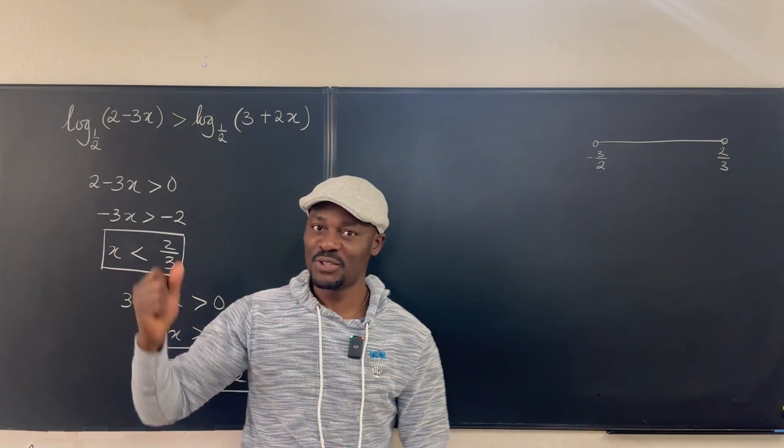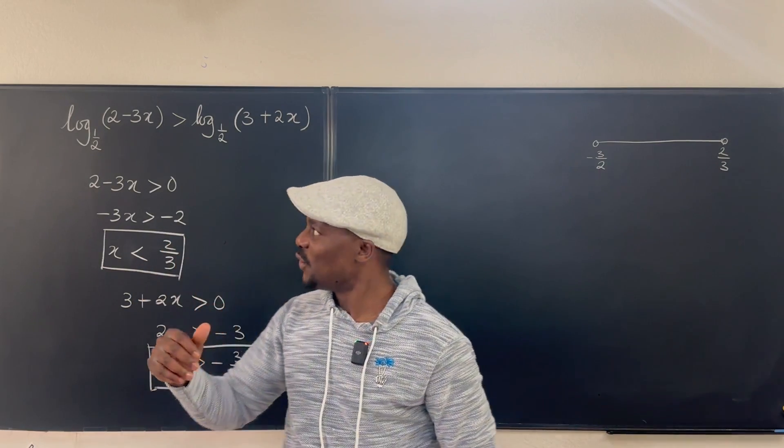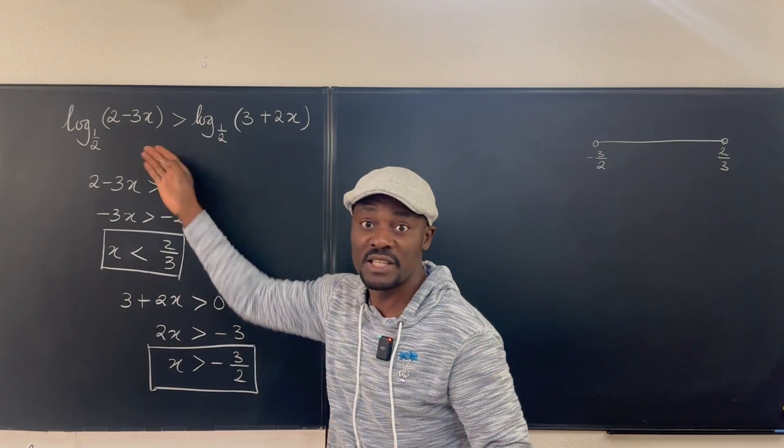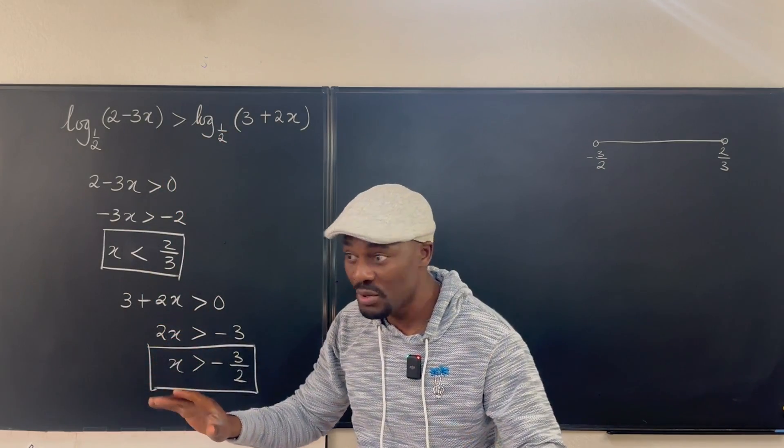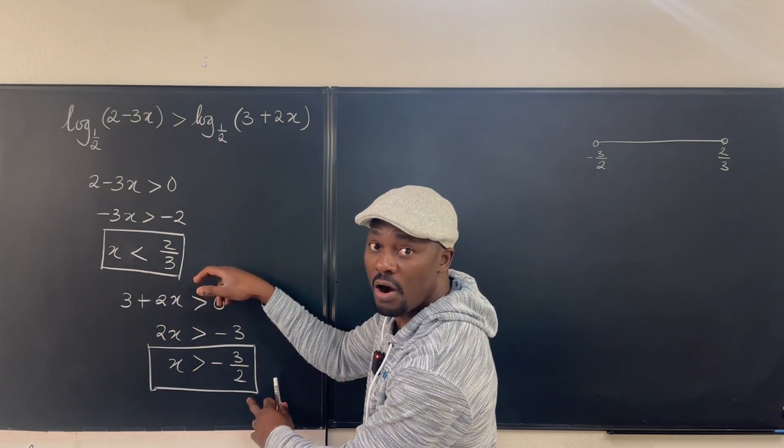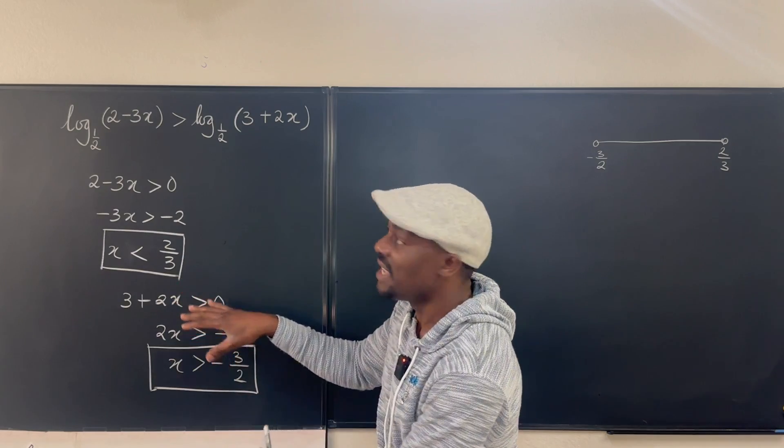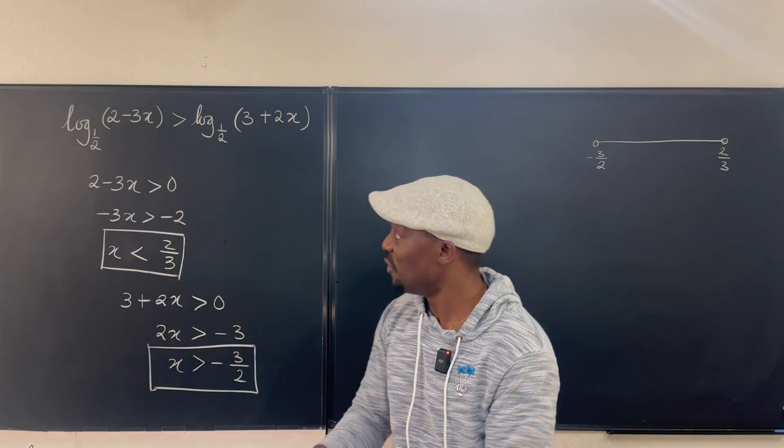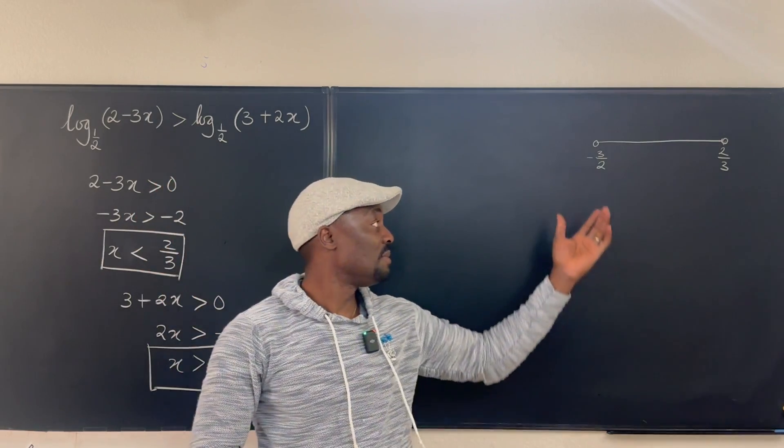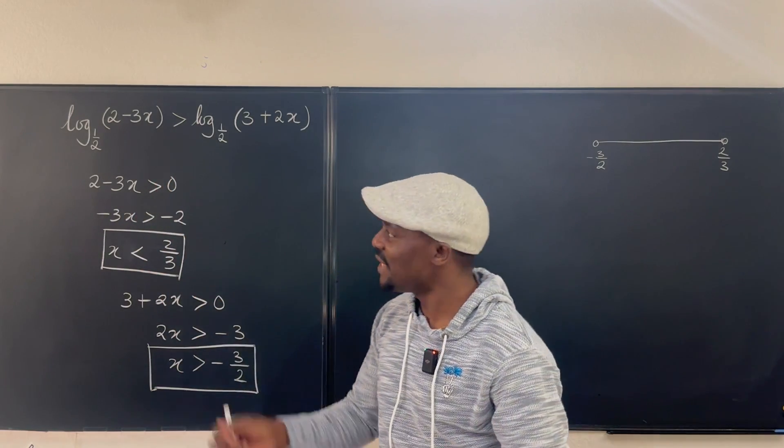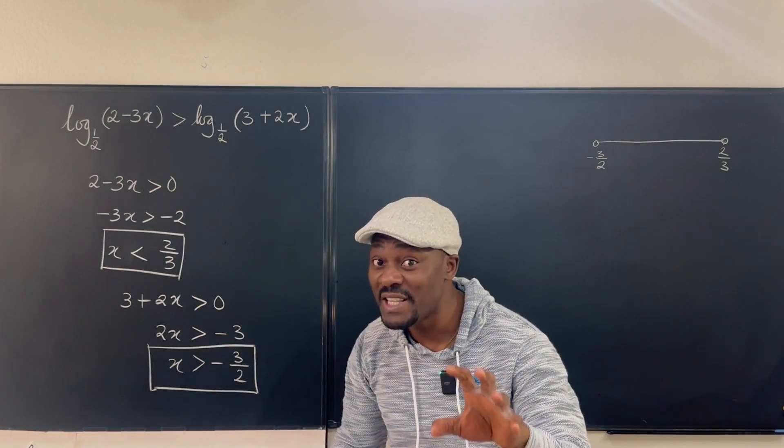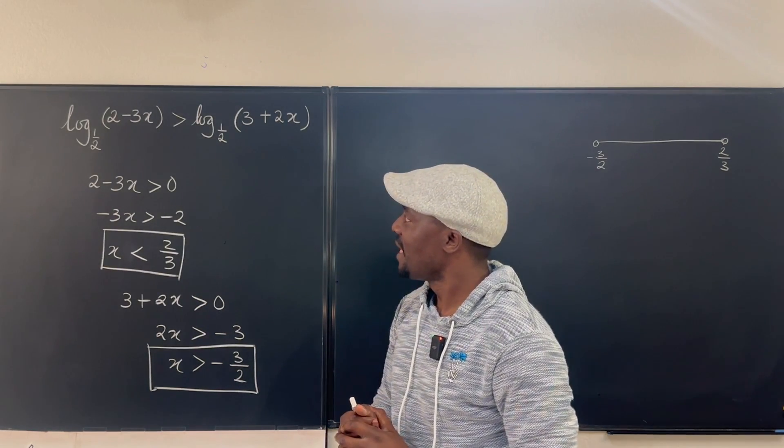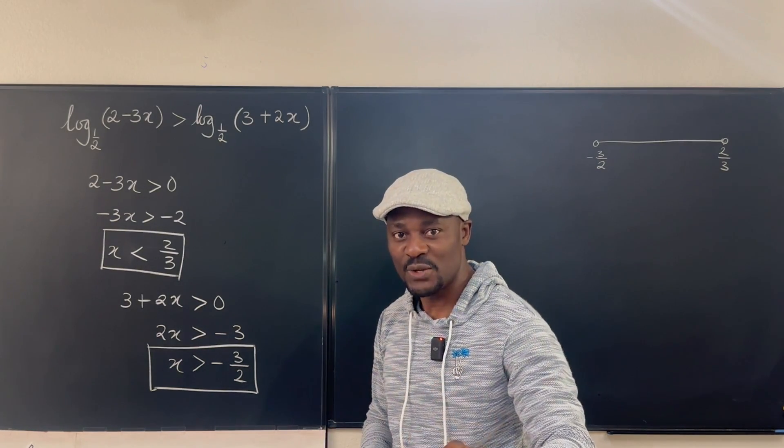Now there's a second part to the problem. It is to find the actual values that make this inequality true. Remember, what we just did are the values of x that make each function exist, which is the domain. So the domain of each of them is combined to be this. The second thing is what makes this true. And that's where it gets tricky. Okay, this is the strategy I would like you to adopt.